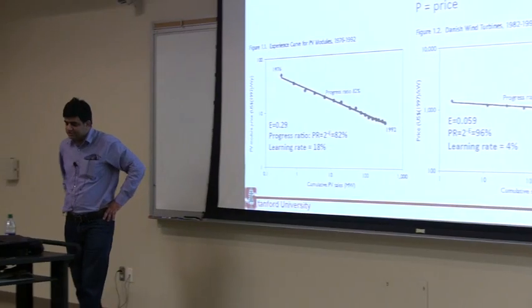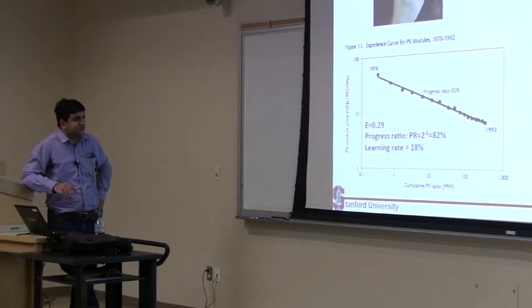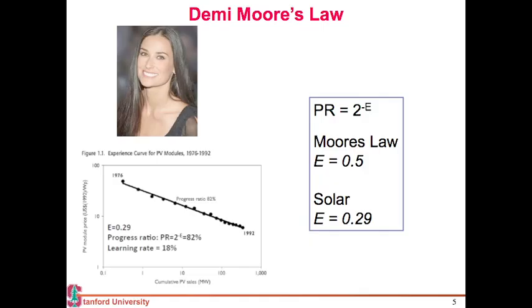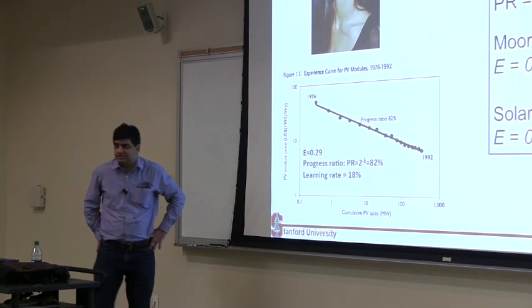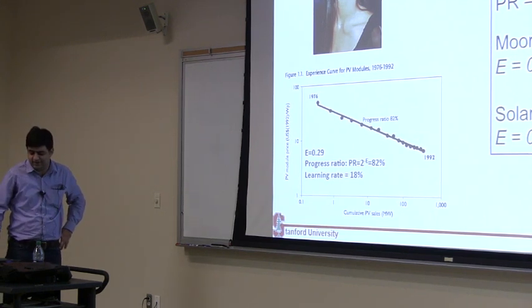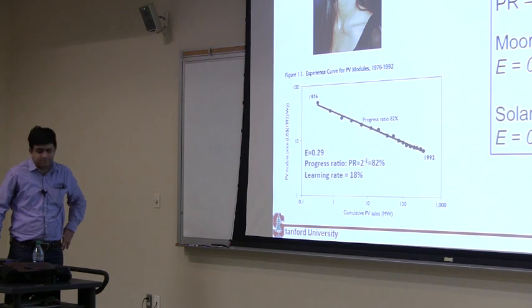The equivalent of Moore's Law in this field is a term popularized by Green Tech Media. They call this Demi Moore's Law. Because Moore's Law is the experience parameter where price used to fall as half every two years, so the experience parameter was somewhere between 0.5 to 0.6. Solar is half of that. Demi in French stands for half. So half of Moore's Law is what the price of solar falls at. That's a good way to remember it.